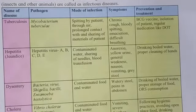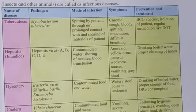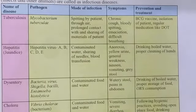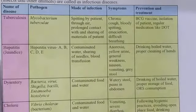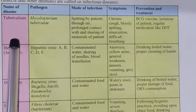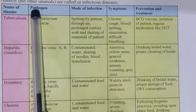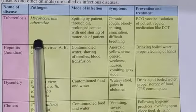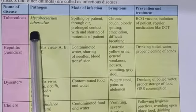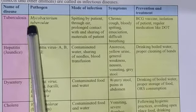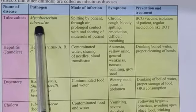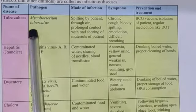Let us start with the first disease, that is tuberculosis — in short we name this disease as TB. This disease spreads because of a pathogen. A pathogen is a microorganism that spreads the disease — the microorganism that harms us is called a pathogen. The pathogen causing tuberculosis is Mycobacterium tuberculi.